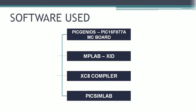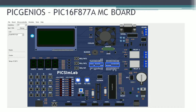Coming to the software used to build the project: we used the PIC16F877A MC port, MPLAB X IDE, the XC8 compiler, and PIC Sim Lab. These are the software tools used to build the washing machine project. The PIC programming board has the PIC16F877A microcontroller, a 16x4 and 16x2 LCD display, and operates at a clock frequency of 20 MHz as mentioned earlier. It also has various peripherals such as LEDs, digital keypads, tactile switches, a buzzer, a fan, etc.